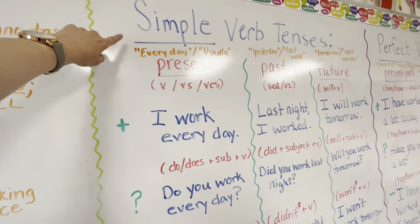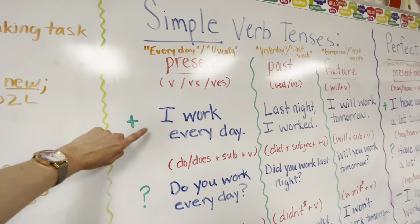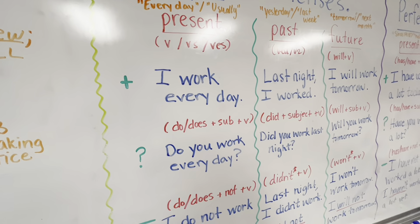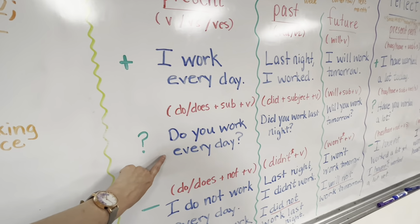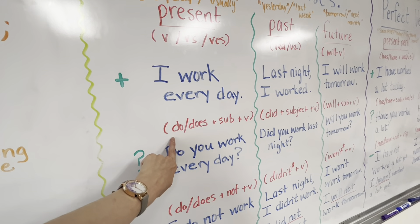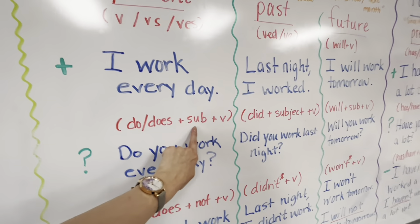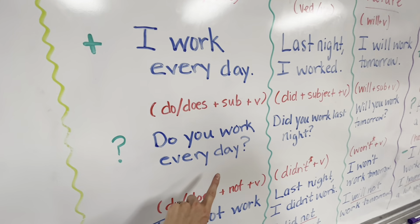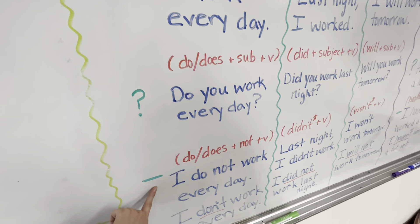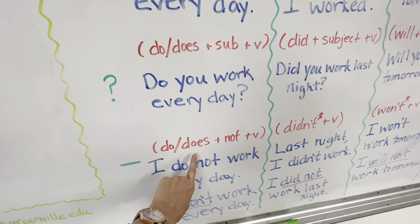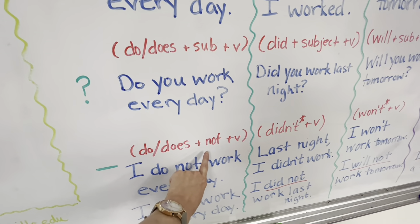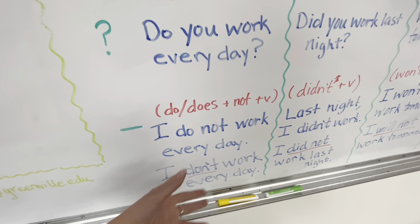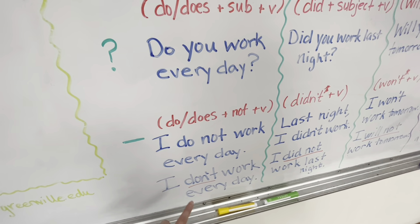Present simple in the positive: I work every day. In the form of a question: do or does plus the subject plus the verb — do you work every day? In the negative: do or does plus not plus the verb form — I do not work every day, or I don't work every day.